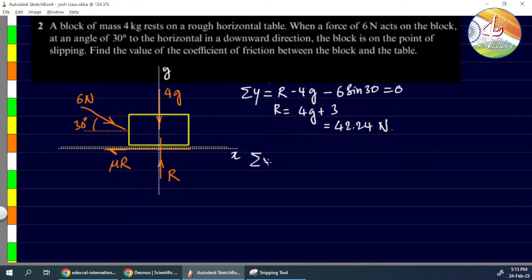Now we know the value of R. Next, Σx - the components in x direction. The horizontal component is 6 cos 30. Adjacent means we get cos.